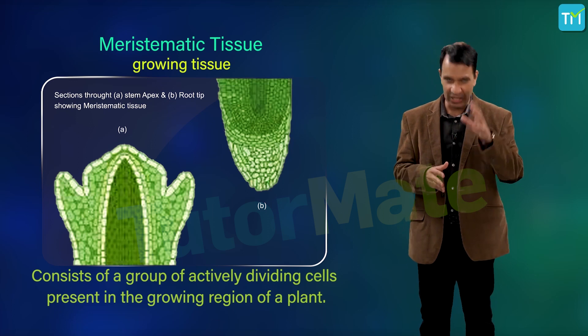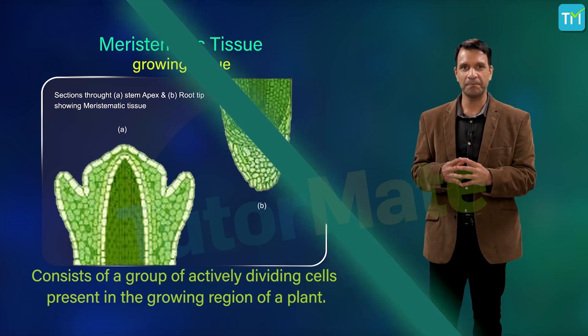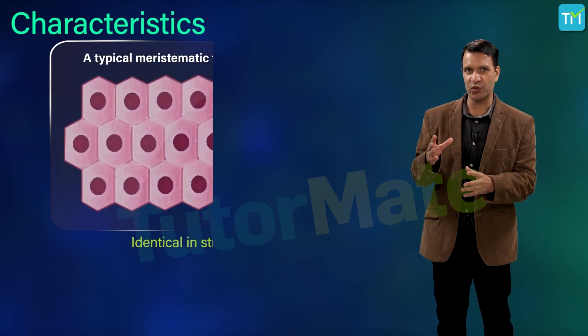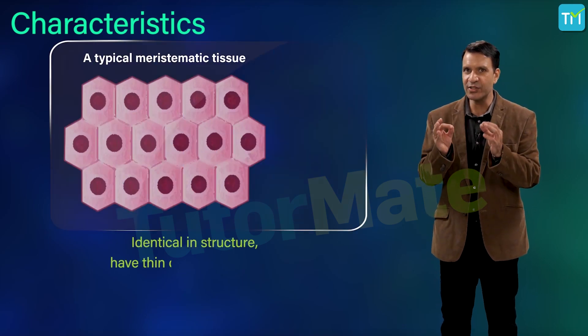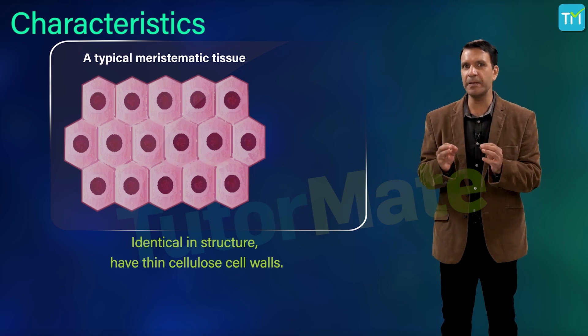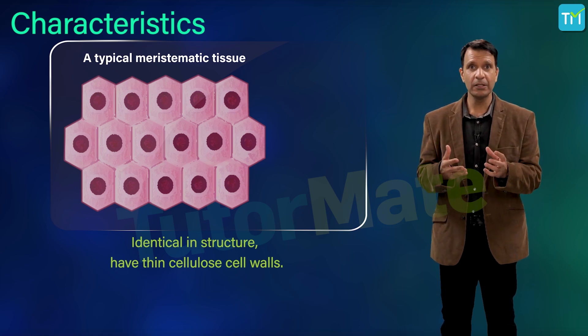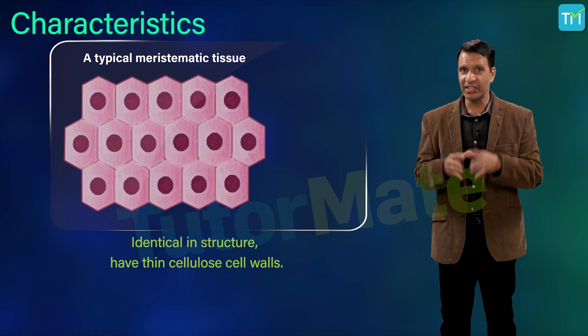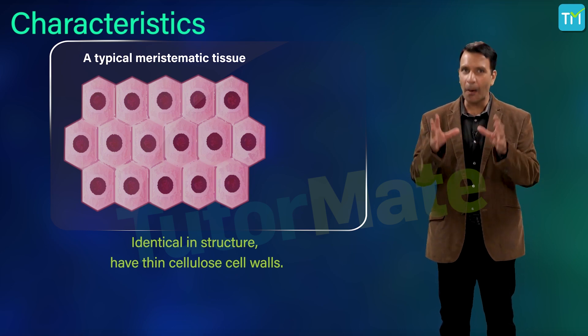These tissues have certain specific characteristics. Let's look at them in detail. The cells of the meristematic tissue are identical in structure and have thin cellulose cell walls. These cells may be spherical, oval, polygonal, or rectangular in shape.